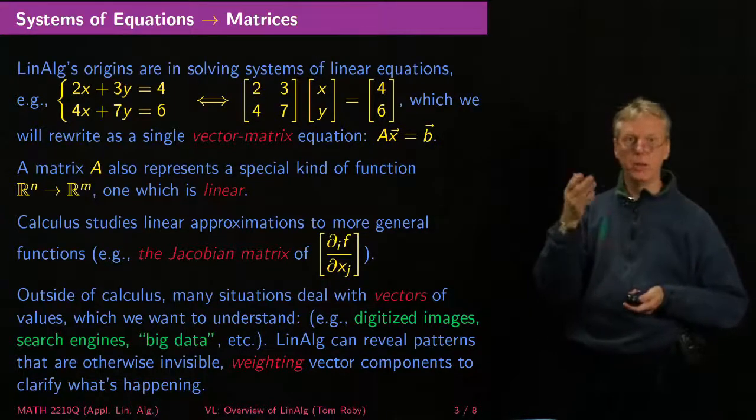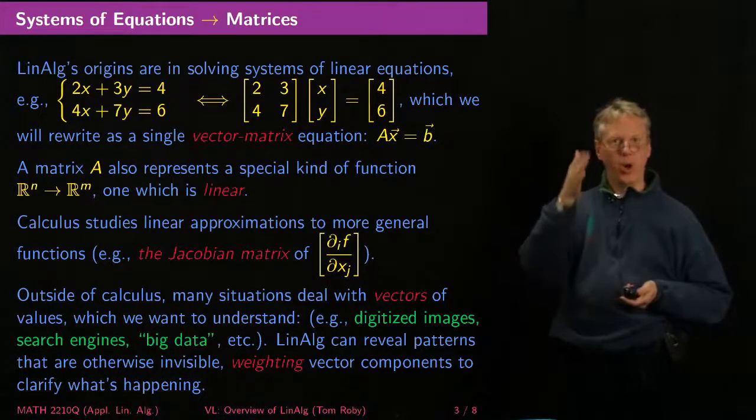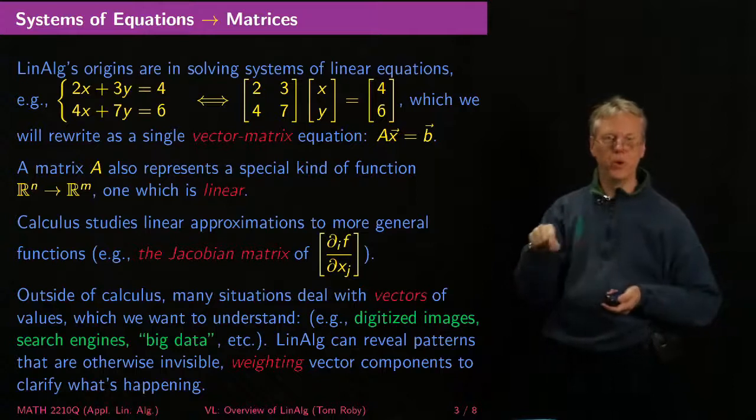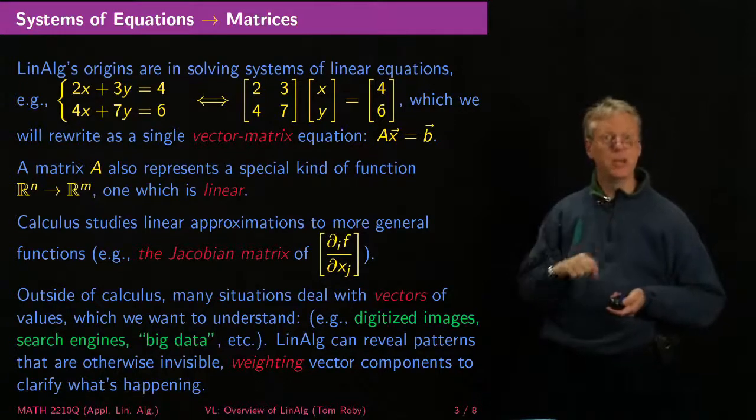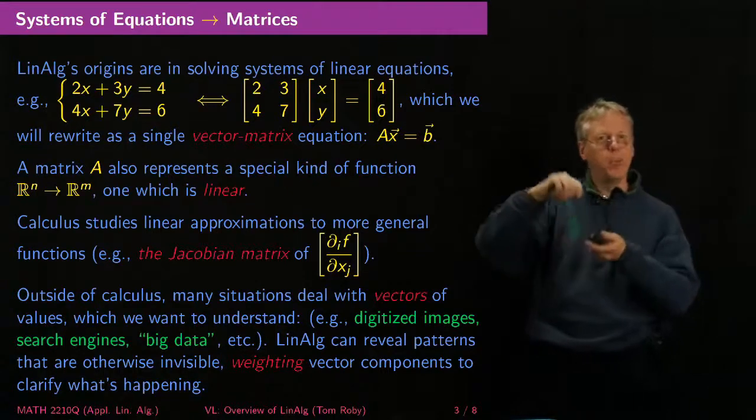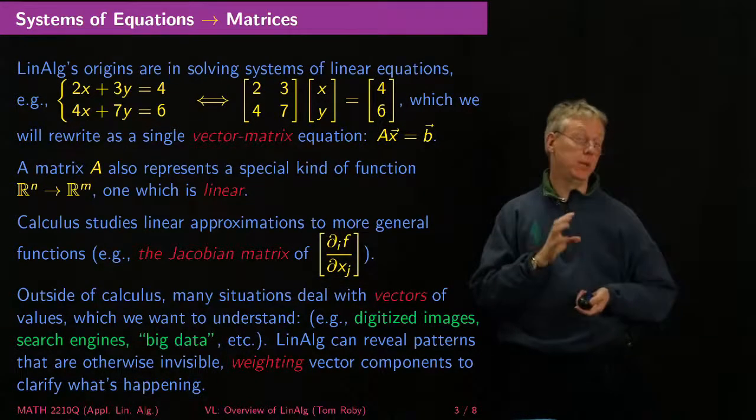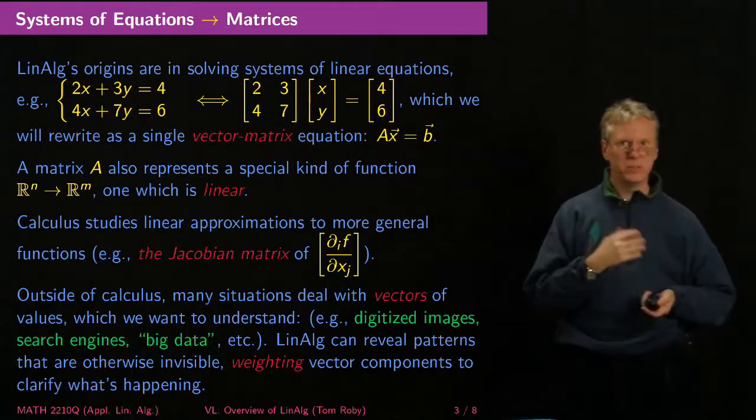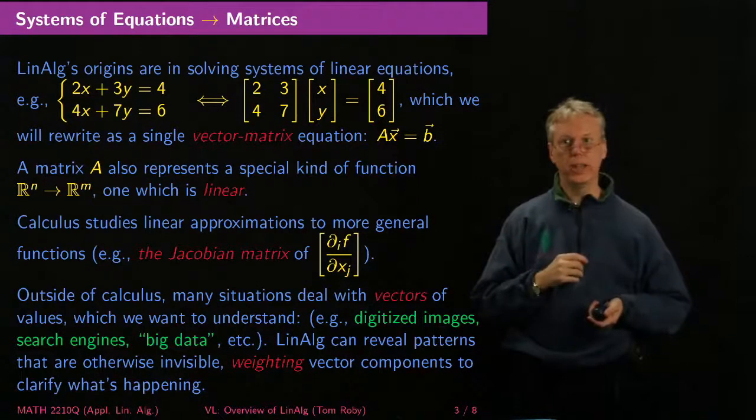And you could say, okay, so I've got a whole vector associated with a bunch of different points. How do I understand what's really going on? What weighted combination of those values gives me the best read on something? That's roughly the idea of things you're trying to look at.